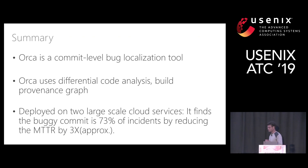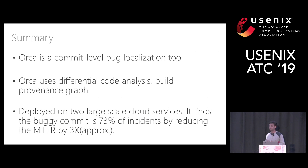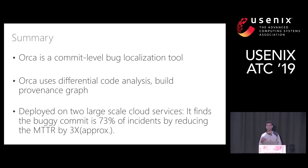To summarize, Orca is a commit-level bug localization tool. It uses techniques like differential code analysis and build provenance graph to constitute and explore a search space and find the root cause commit. Orca is deployed on two large-scale cloud services at Microsoft, with more in the process of onboarding, and it reduces the mean time to recovery by 3x.